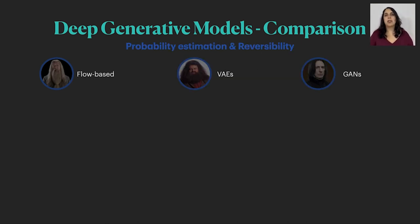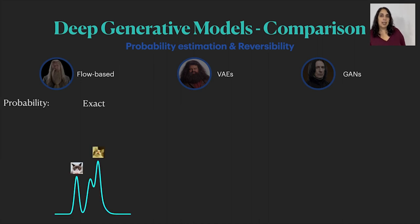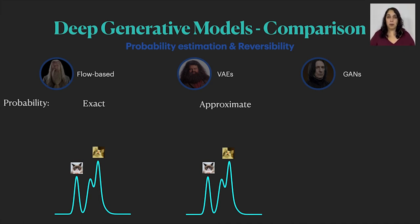If you look at the probability estimations, flow estimates it exactly while VAE is approximated. GANs don't explicitly try to model the distribution, but they are able to generate images from it. We can look at it as if they're implicitly learning a subset of this distribution.